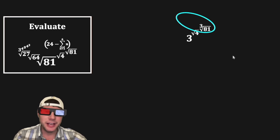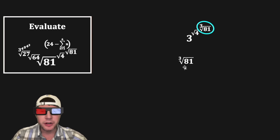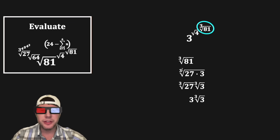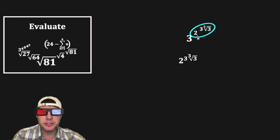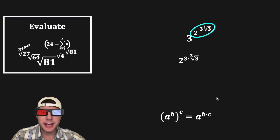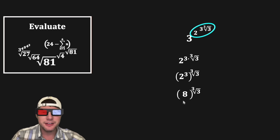We can rewrite the cube root of 81 as the cube root of 27 times 3, then give each factor its own cube root. The cube root of 27 is 3, so the cube root of 81 equals 3 times the cube root of 3, written as 3∛3. Now updating our expression: the square root of 4 becomes 2, giving us 2 to the power of 3∛3. Since 3∛3 means 3 times ∛3, we can rewrite this as (2 to the 3) to the ∛3, and 2 to the 3 is 8. So this simplifies to 8 to the ∛3.